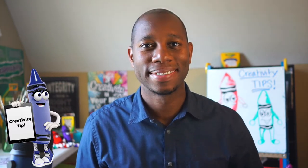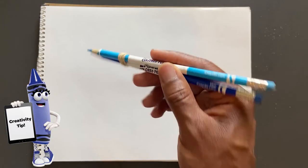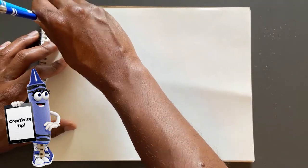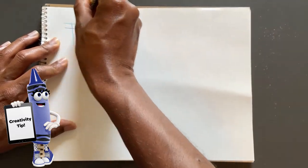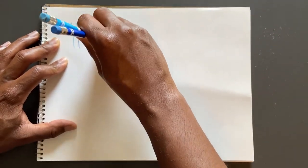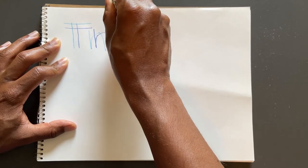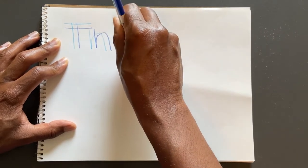Next, brainstorm titles and illustrations that are connected to your interest. Ready for a creativity tip? Take two colored pencils and connect them using a rubber band. Write your title and notice that the letters will appear block style or ribbon-like.